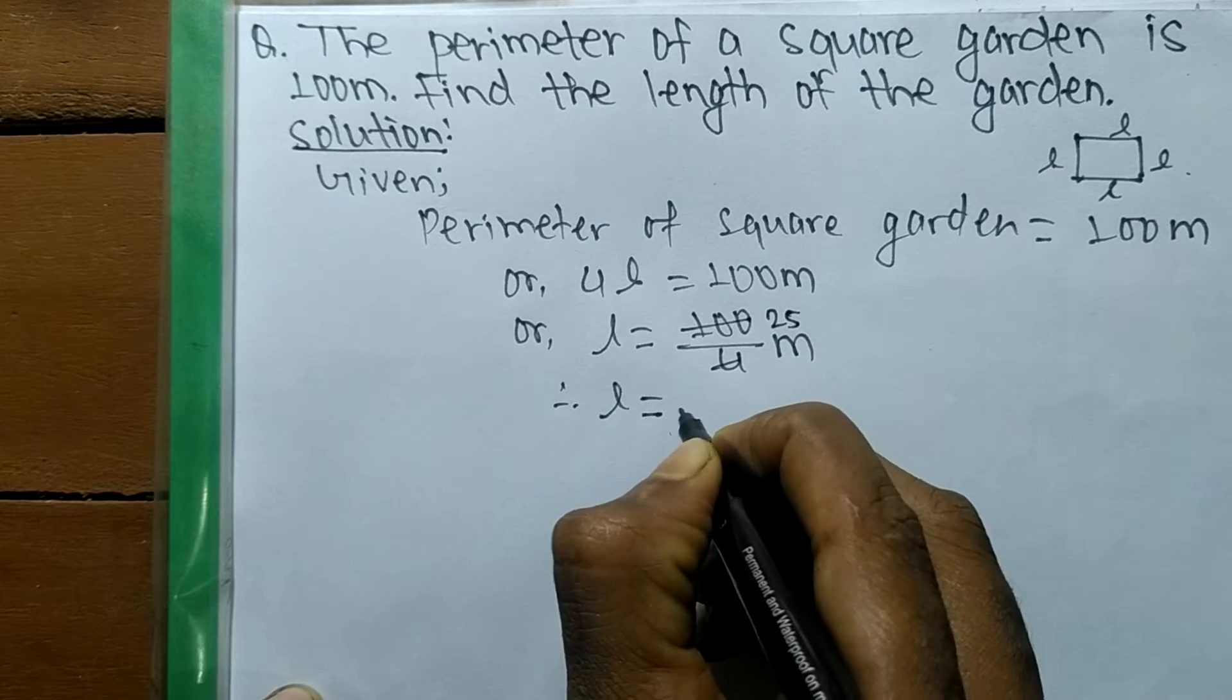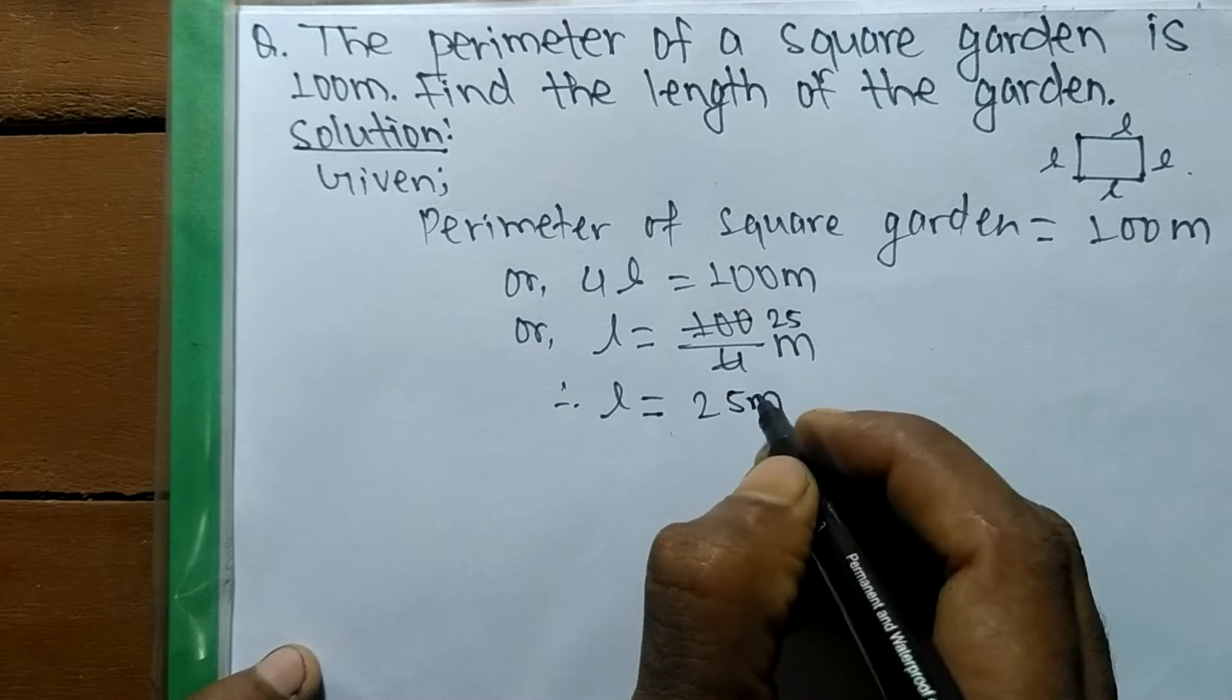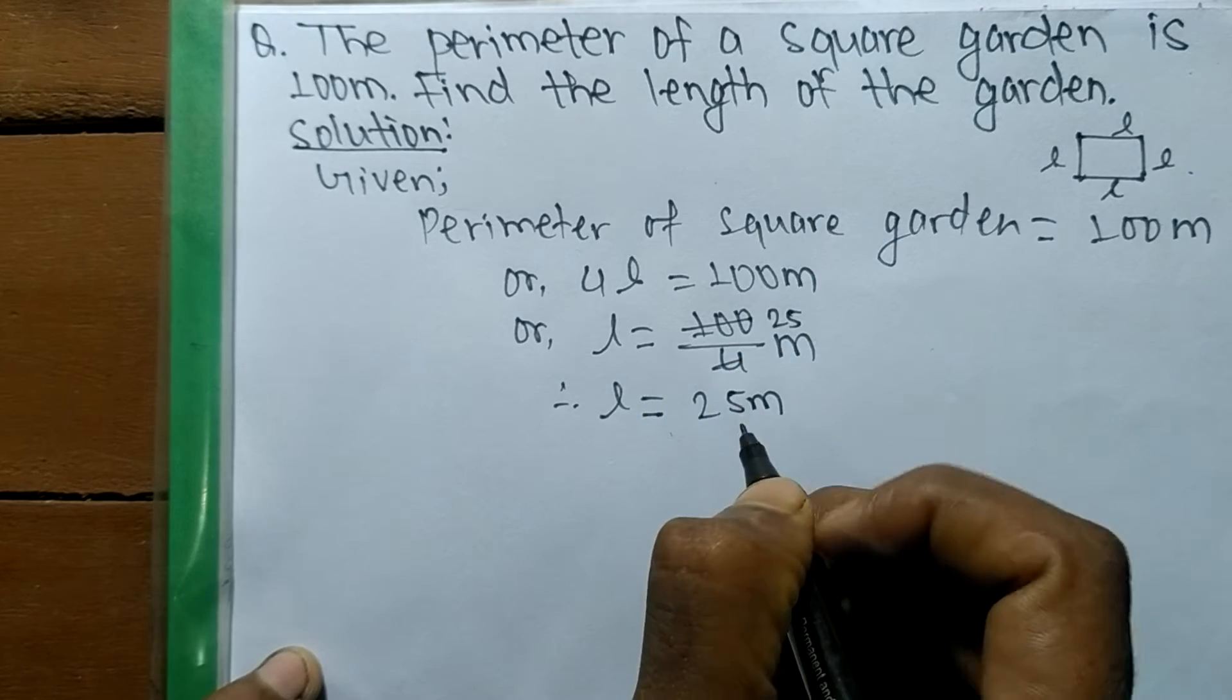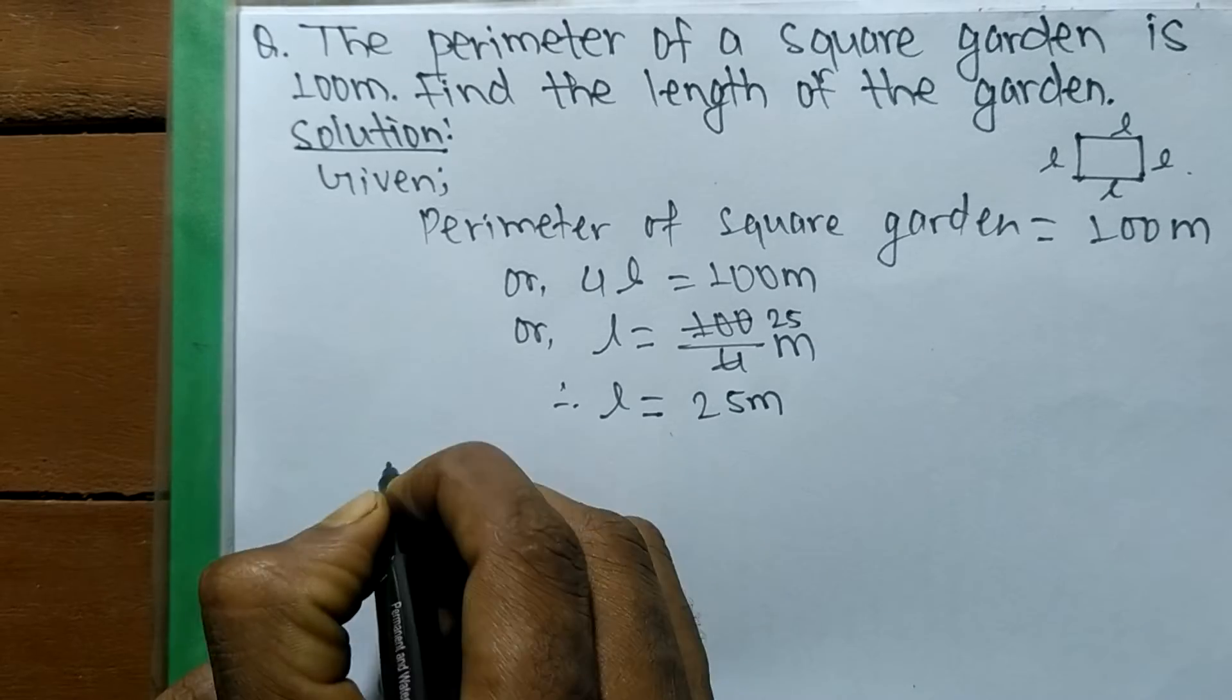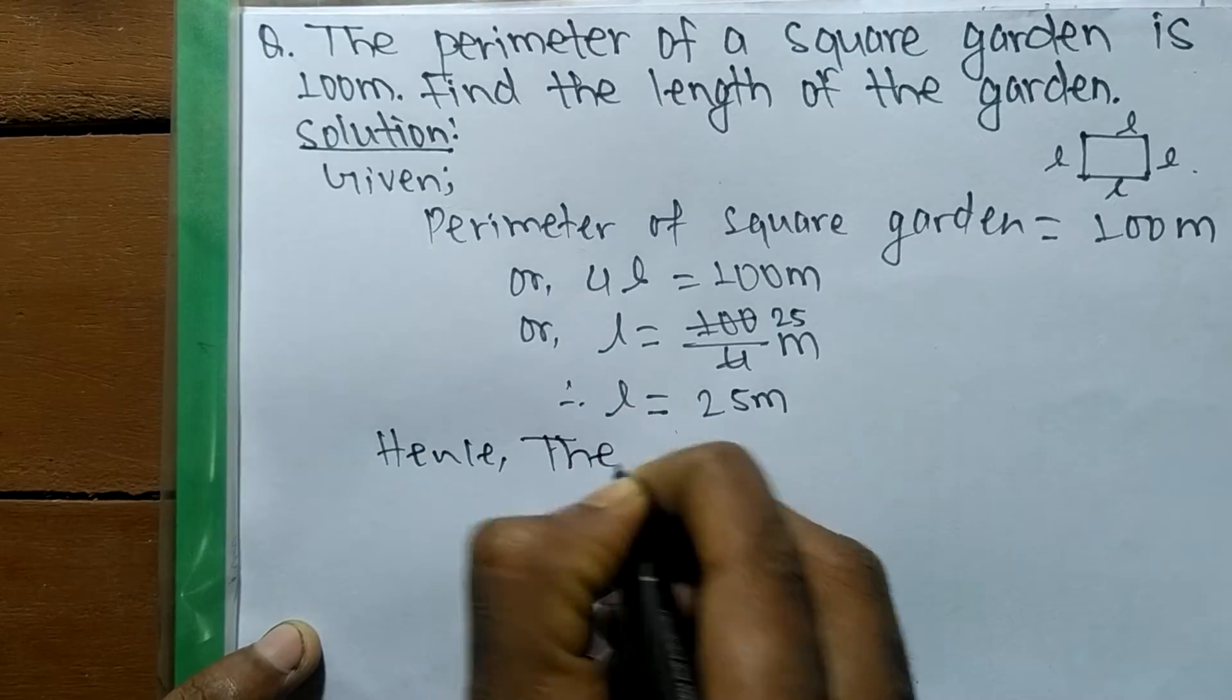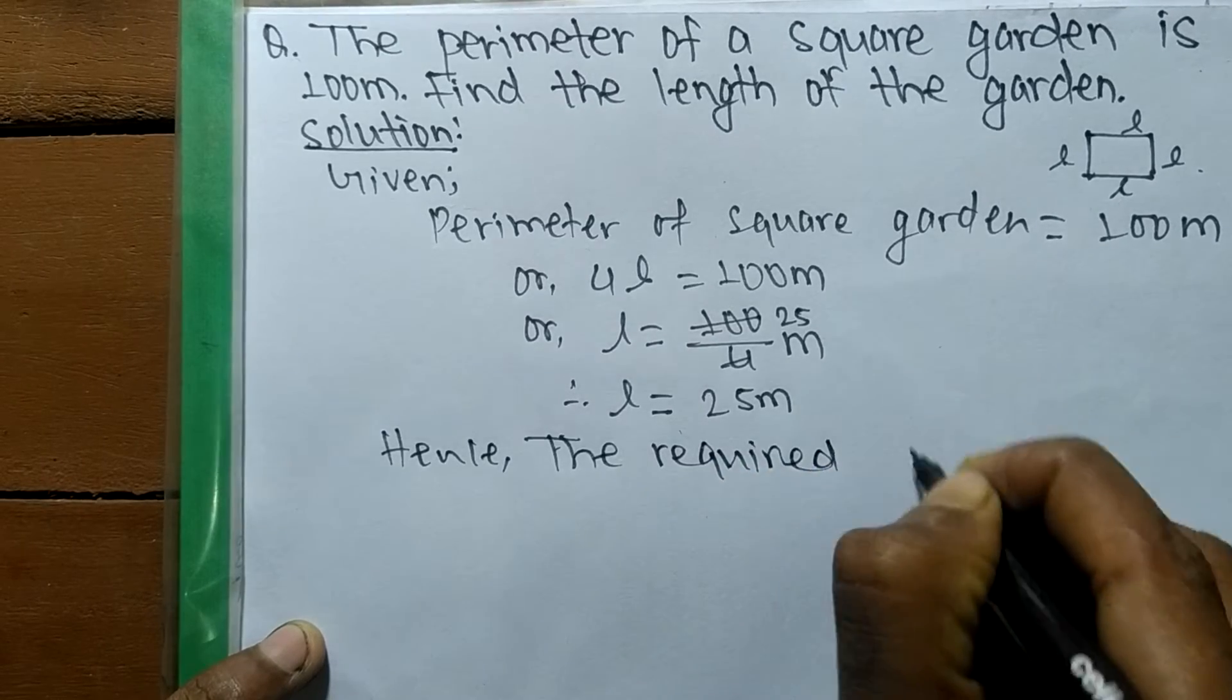Therefore L is equal to 100 divided by 4, which means it is equal to 25. So L is equal to 25 meters. L means the length of the garden, which is equal to 25 meters.